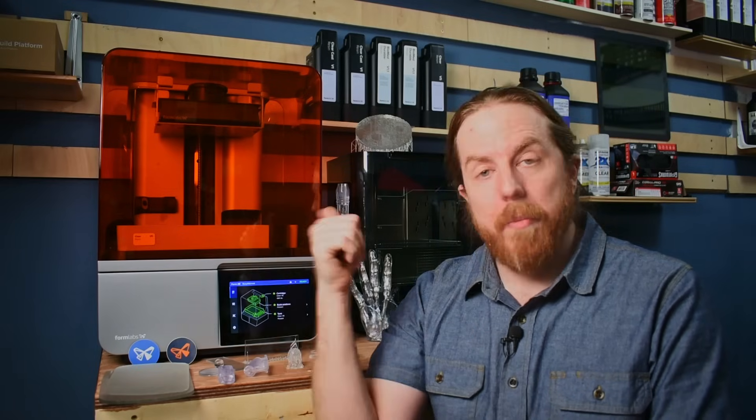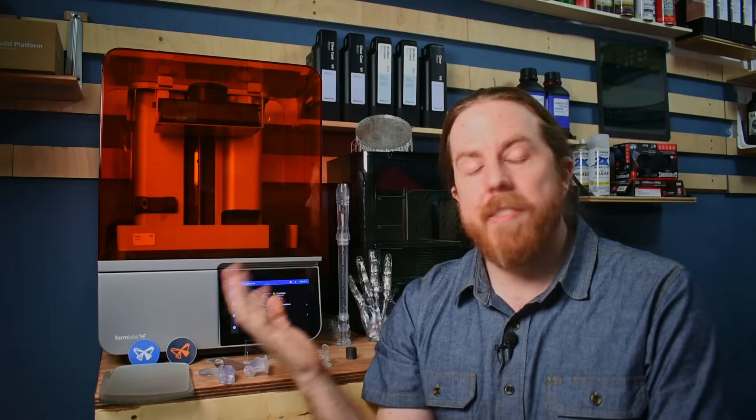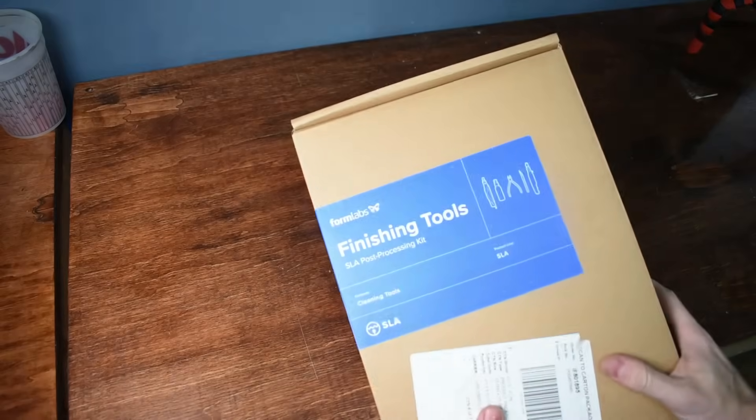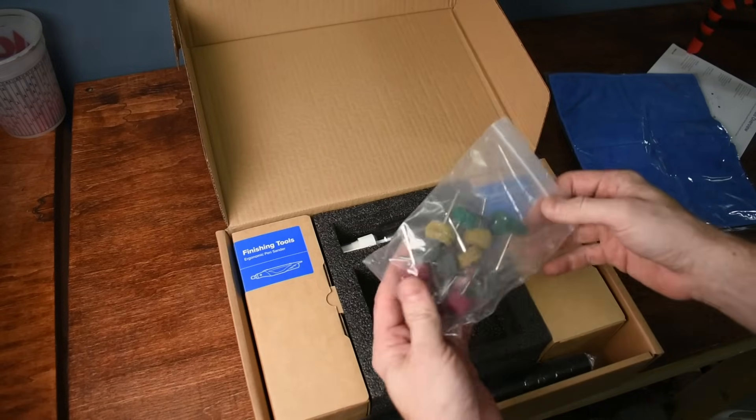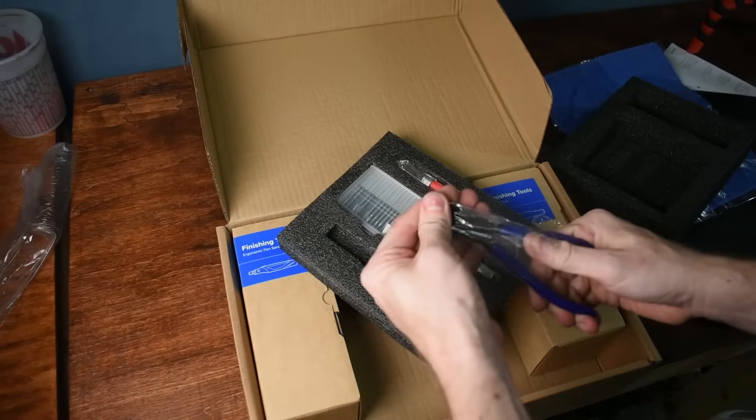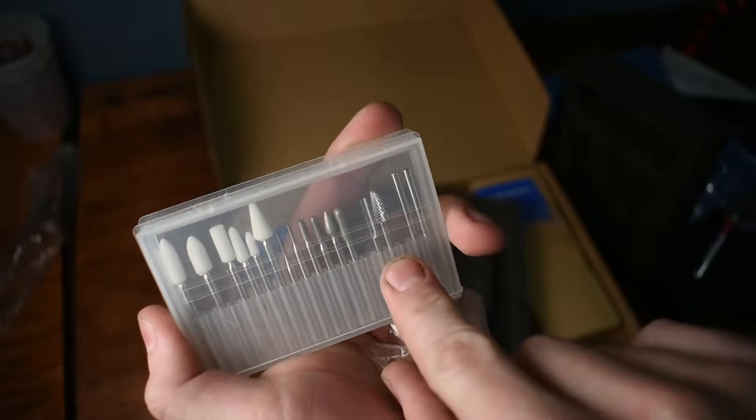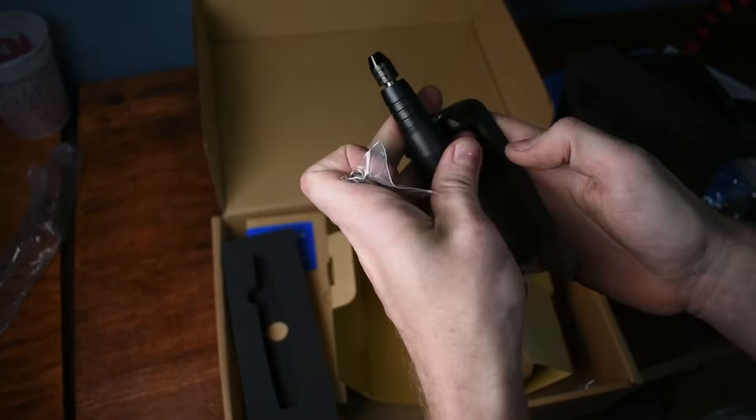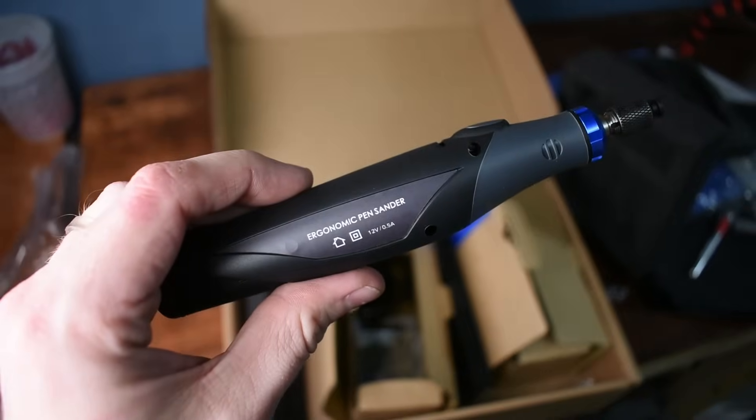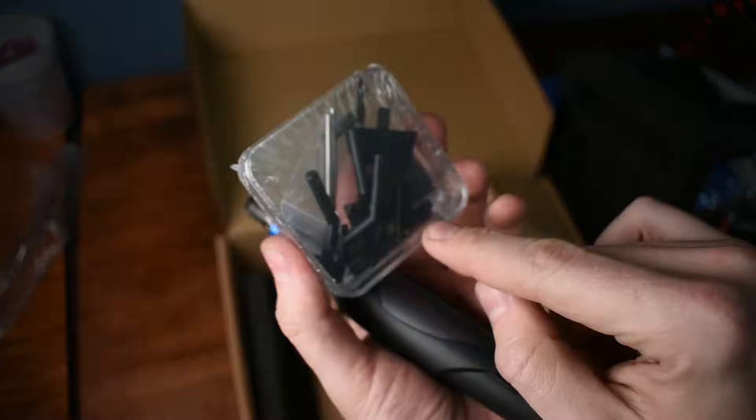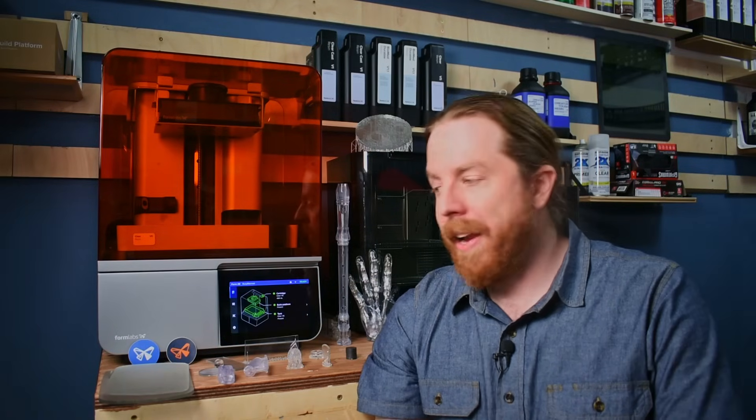And as cool as the software is, it's still not the best part. As a side note, when you're done printing and cleaning and curing, sometimes you need post-processing, like cleanup. Formlabs has a finishing tools kit that gives you everything you need there. Rotary tool, pen sander, clippers, a mat, everything. You could literally start with no equipment, buy the big package from Formlabs, and they will send you everything you need start to finish.